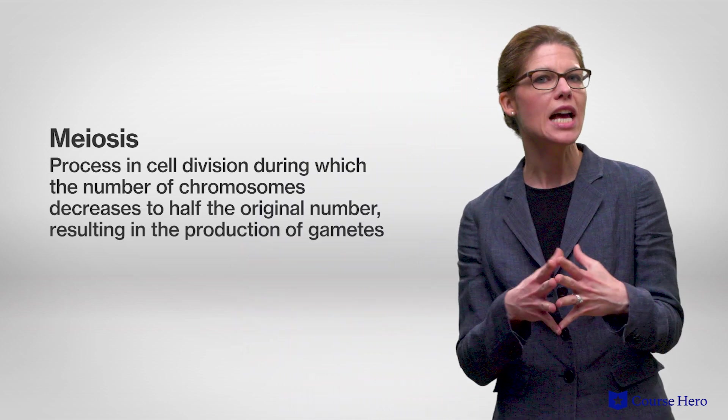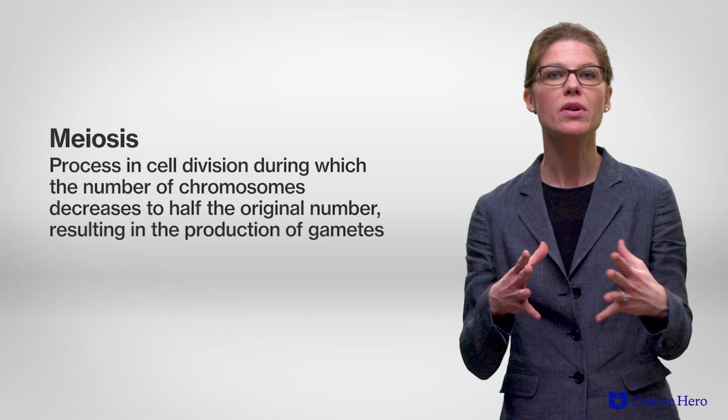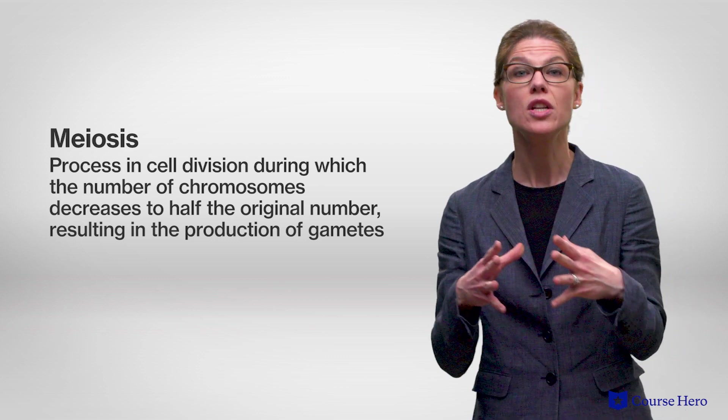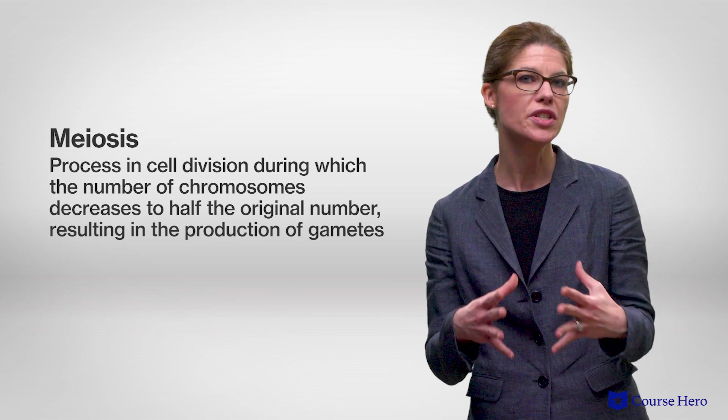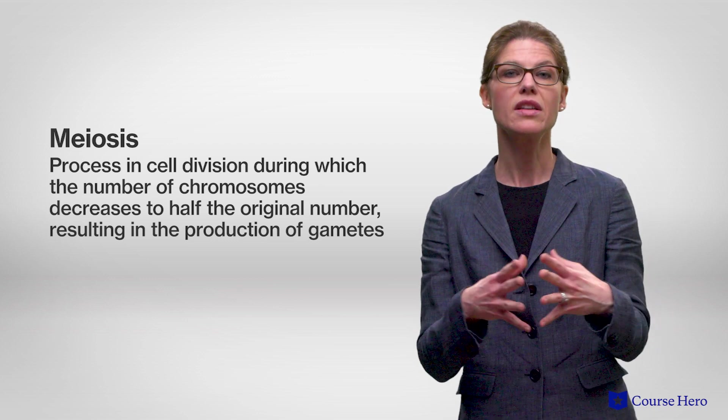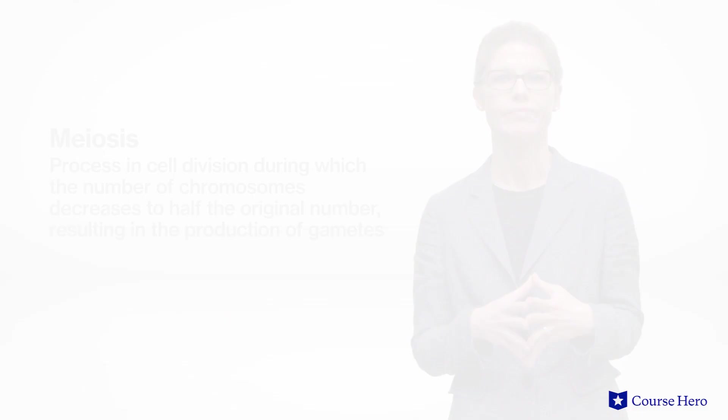Meiosis is a type of cell division during which the number of chromosomes decreases to half the original number by two divisions of the nucleus, resulting in the production of gametes. Meiosis is often confused with mitosis, the reproduction of somatic or body cells, such as skin or blood cells. While both processes involve the formation of new cells, there are some major differences between them.